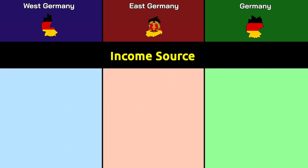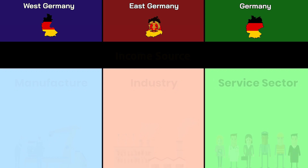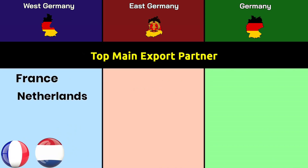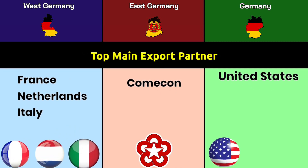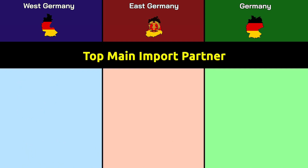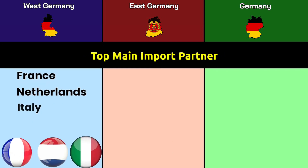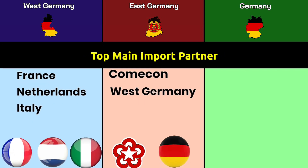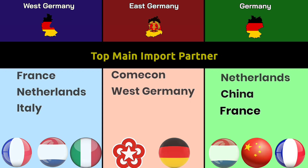Income sources: manufacturing, industry, and the service sector. Top main export partners — West Germany: France, Netherlands, and Italy; East Germany: Comecon; modern Germany: United States, France, and China. Top main import partners — West Germany: France, Netherlands, and Italy; East Germany: Comecon and West Germany; modern Germany: Netherlands, China, and France.